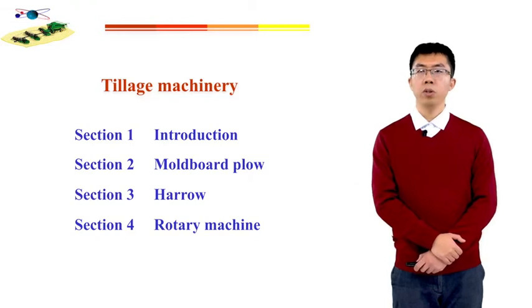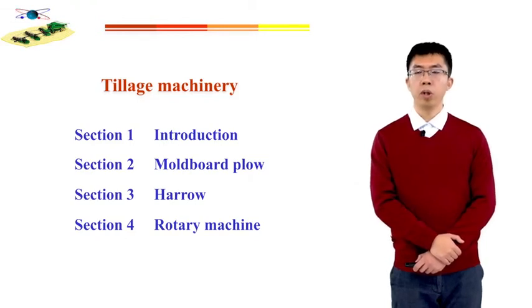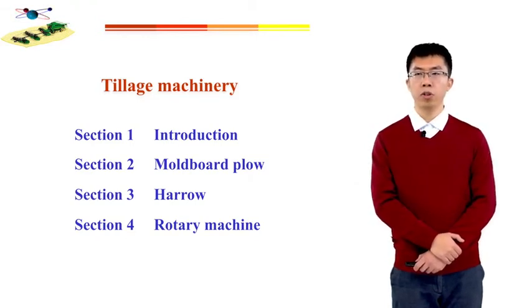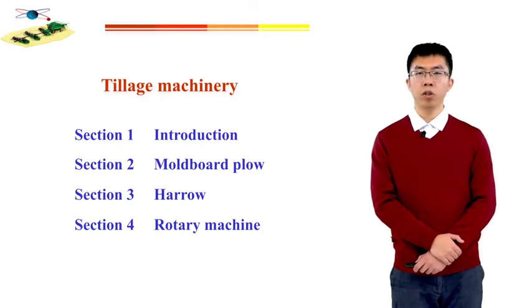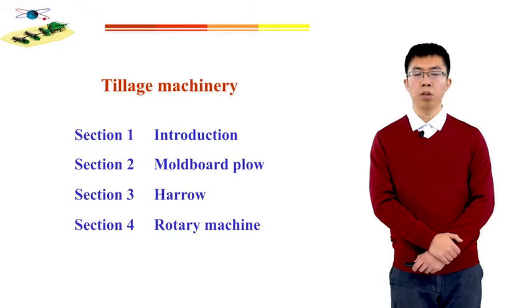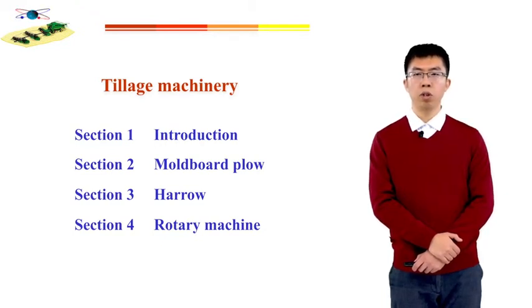For Intelligent Machinery, we will talk about four sections. Section 1 is the introduction, section 2 is the moldboard plow, section 3 is the harrow, and section 4 is the rotary machine.